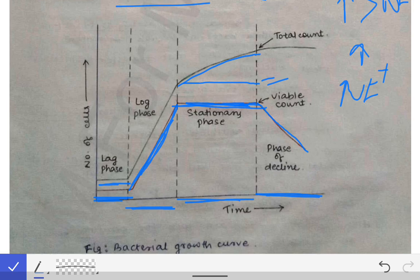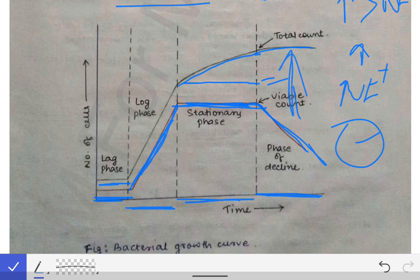In the decline phase, the viable count decreases but the total count is still rising, not falling. This is because dead bacteria, although dead, are still present in the nutrient media and are counted in the total count. So the total count will be higher. That is everything about the bacterial growth curve.